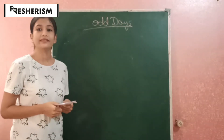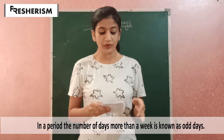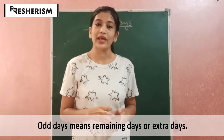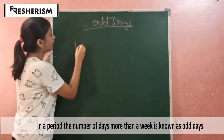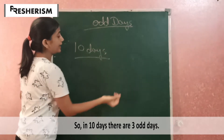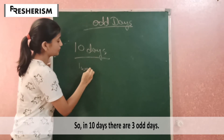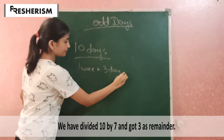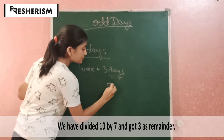To solve questions on calendars, there is a concept known as odd days. In a particular period, the number of days more than a complete week are called odd days. Odd days can also be known as remaining days or extra days. For example, suppose there are 10 days — in 10 days, there are only 3 odd days, because 10 days equals 1 week plus 3 days. These 3 remaining days are known as odd days.